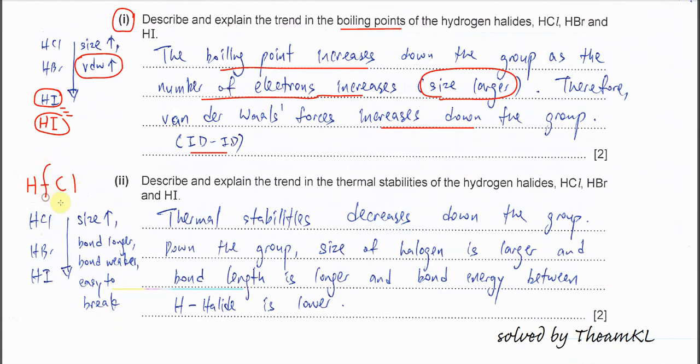When it breaks, so it needs how much energy. Same thing happened for HBr, HI. We know that when down the group, size increase and bond is longer. Because the size of atom, this halogen is more. Therefore, the bond is weaker and it's easy to break. When it's easy to break means we know that the thermal stability is not good. Because easy to break, not stable at all when we heat it. So thermal stability decreases down the group.